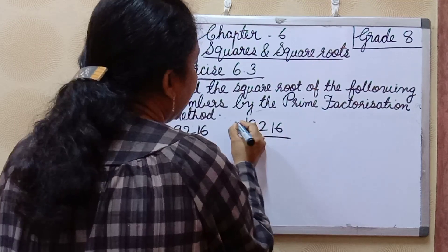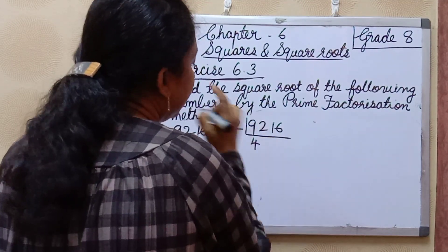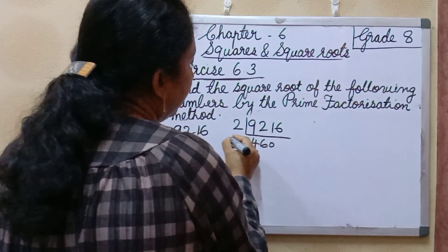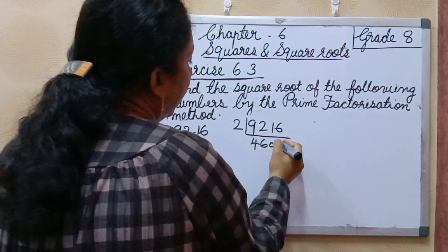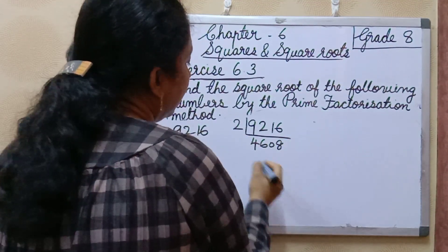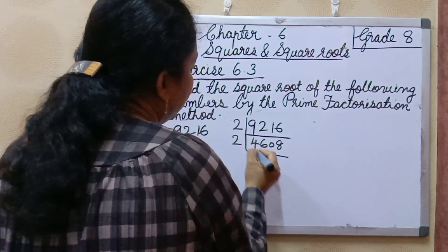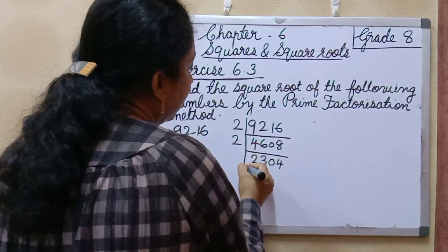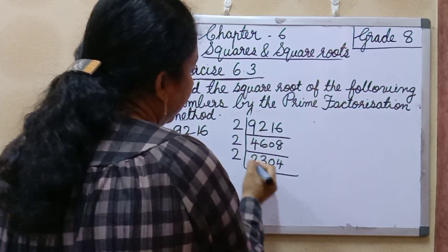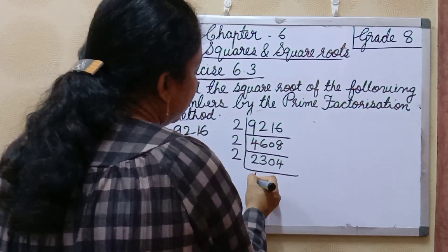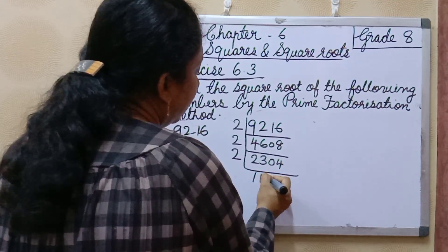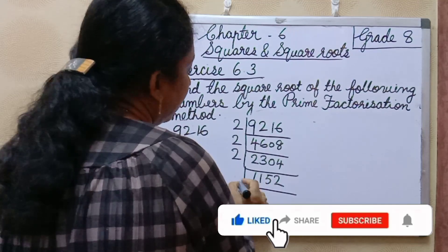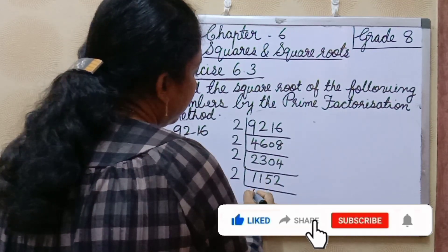Next number: 9216, divided by 2. 4 2's are 8, then 6 2's are 12, then 8 2's are 16, then 2 2's are 4, 3 2's are 6, continuing to divide by 2 repeatedly.